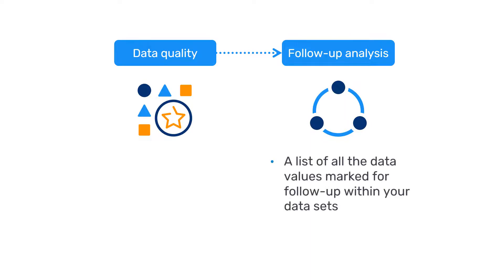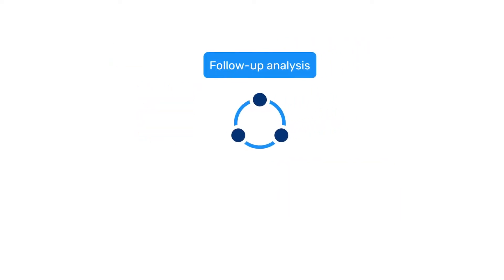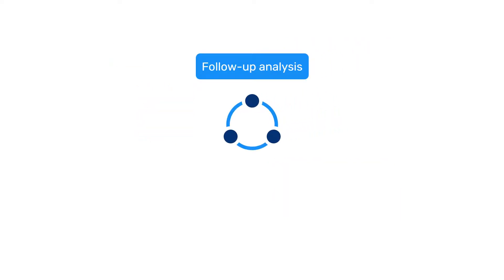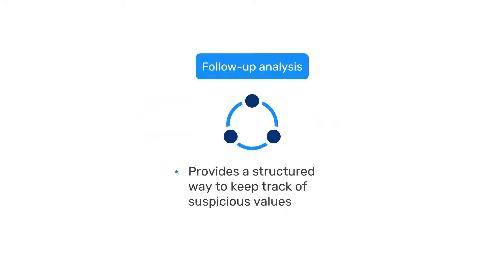In the DHIS2 data quality app, the follow-up analysis tool can be used to access a list of all the data values marked for follow-up within your data sets, making it easier to find and follow up on them. This can help improve data quality by providing a structured way to keep track of suspicious values and the actions that have been taken to review them. This is typically done by DHIS2 users who have appropriate access to view data entered by others. Let's take a look at how to use this tool.